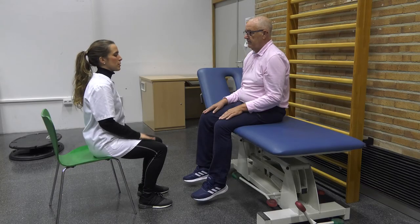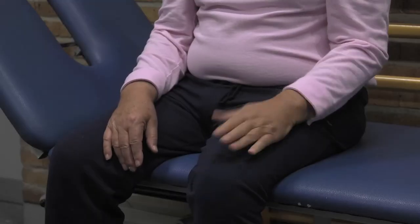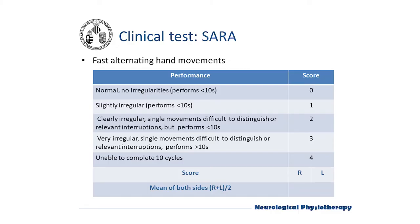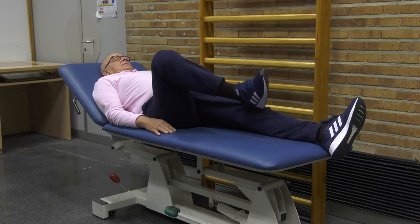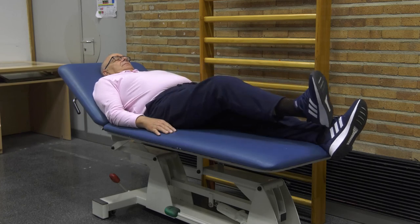The patient is asked to perform 10 cycles of repetitive alternation of pronation and supination of the hand on his or her thigh, as fast and as precisely as possible. Exact times for movement execution must be recorded, with attention paid to any irregularities or interruptions of the movement.